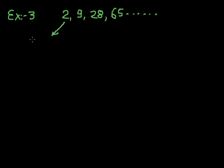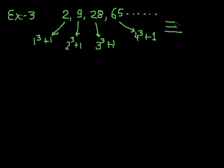Yes, it is a sequence. Why? The 2 can be written as 1 cube plus 1, the 9 can be written as 2 cube plus 1, 28 can be written as 3 cube plus 1, and 64 can be written as 4 cube plus 1. So there is an order as well as some specific rule, and the rule is n cube plus 1.